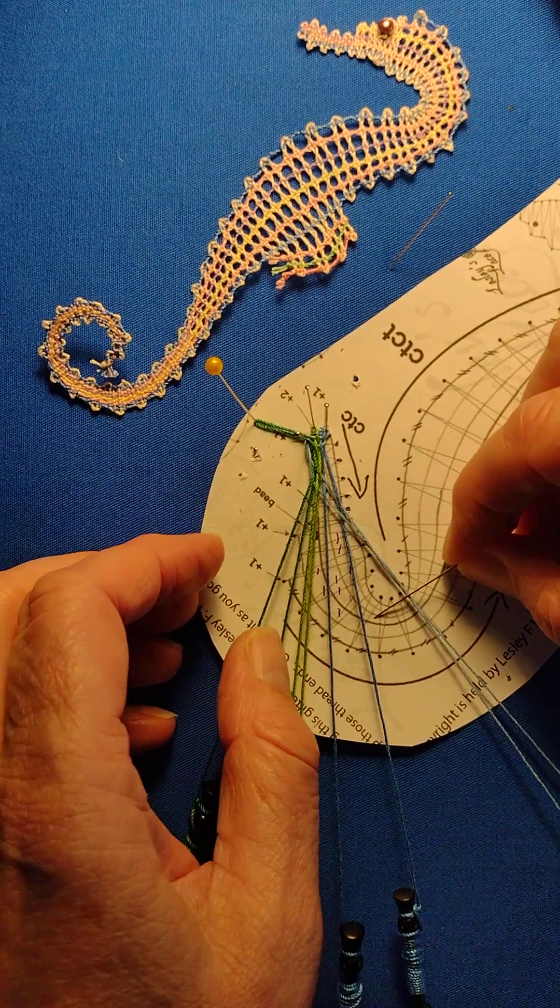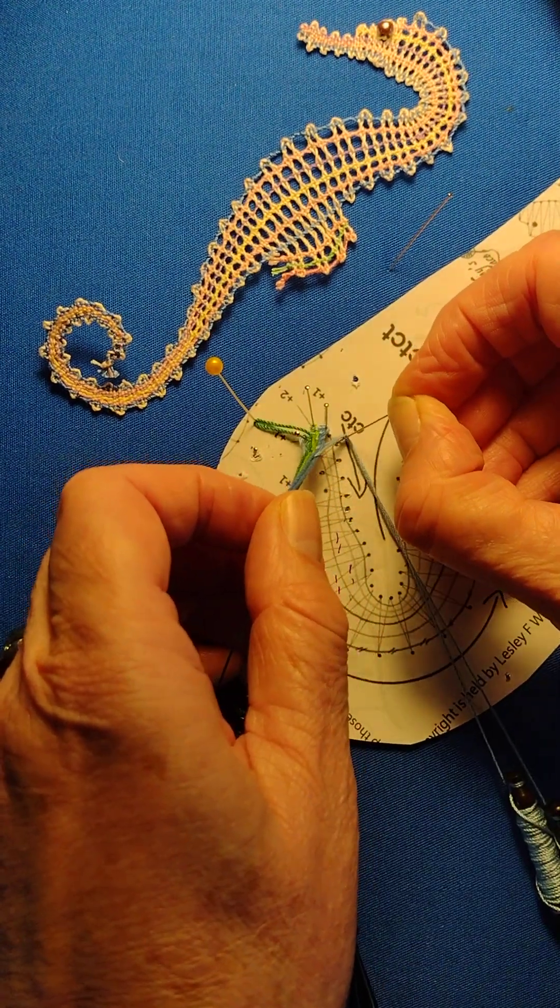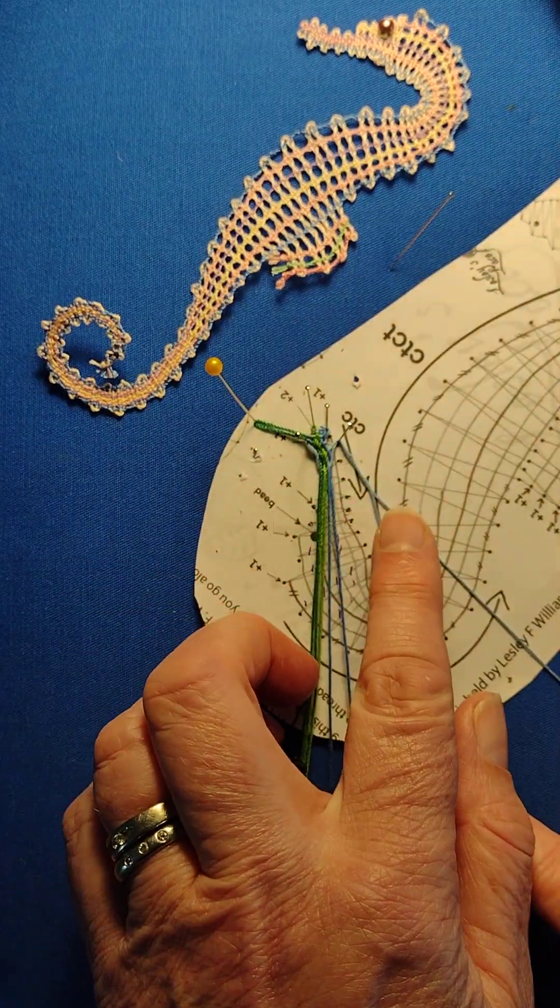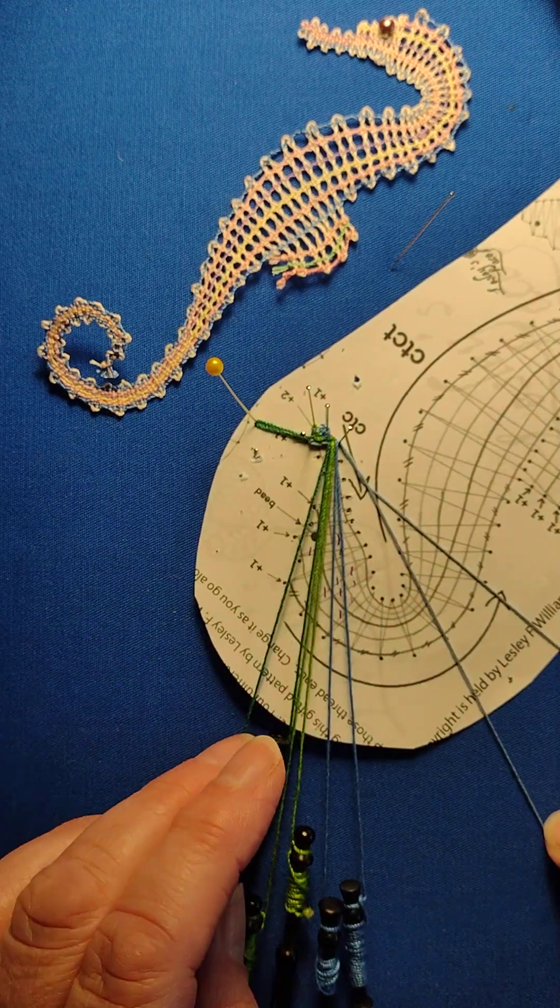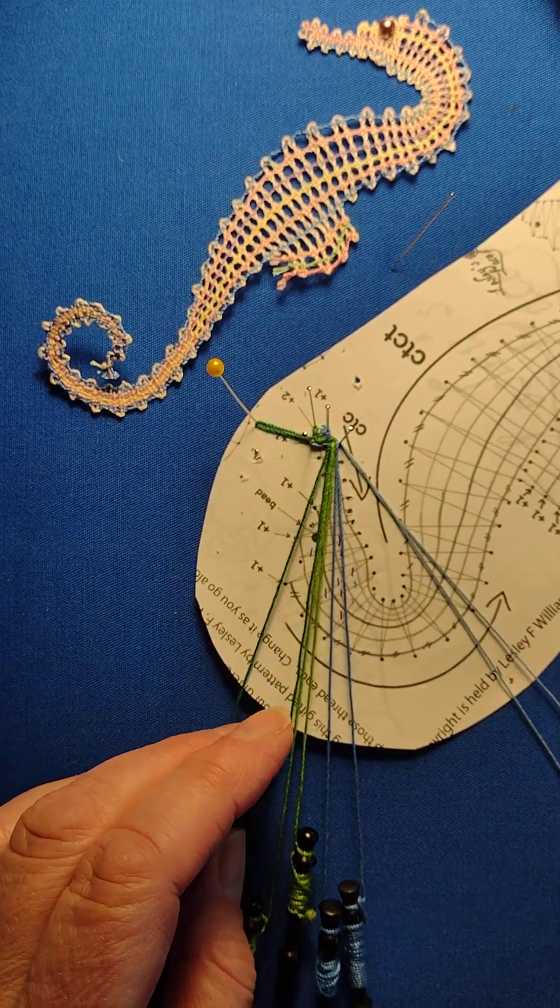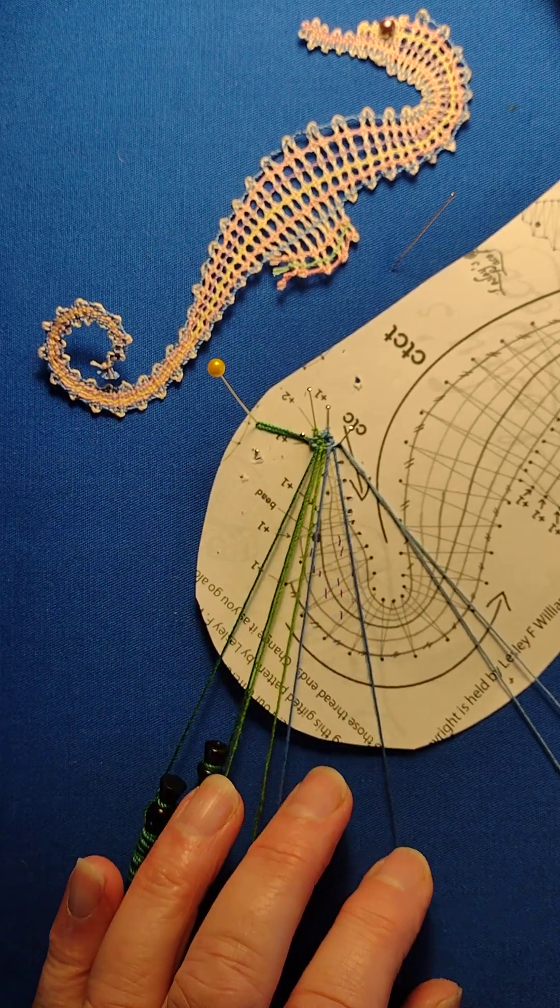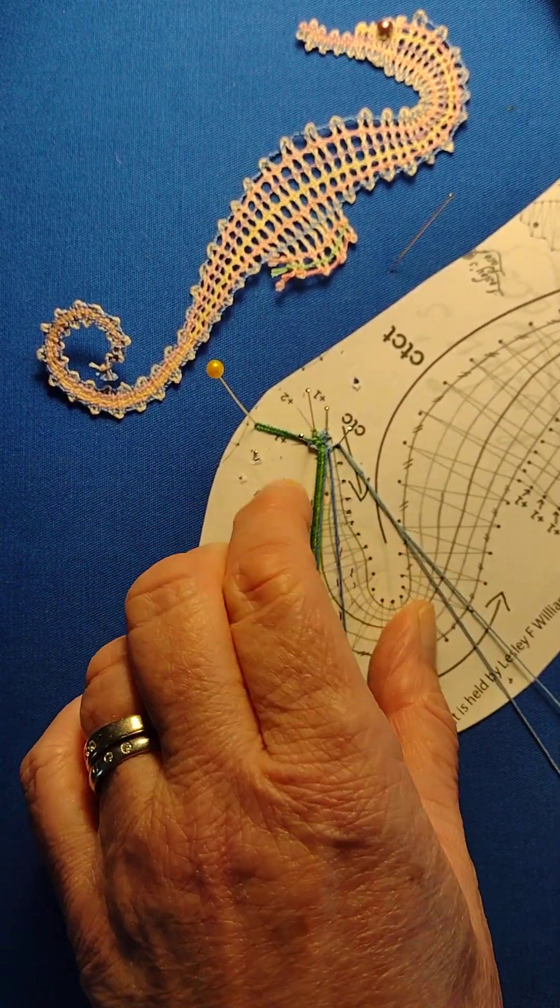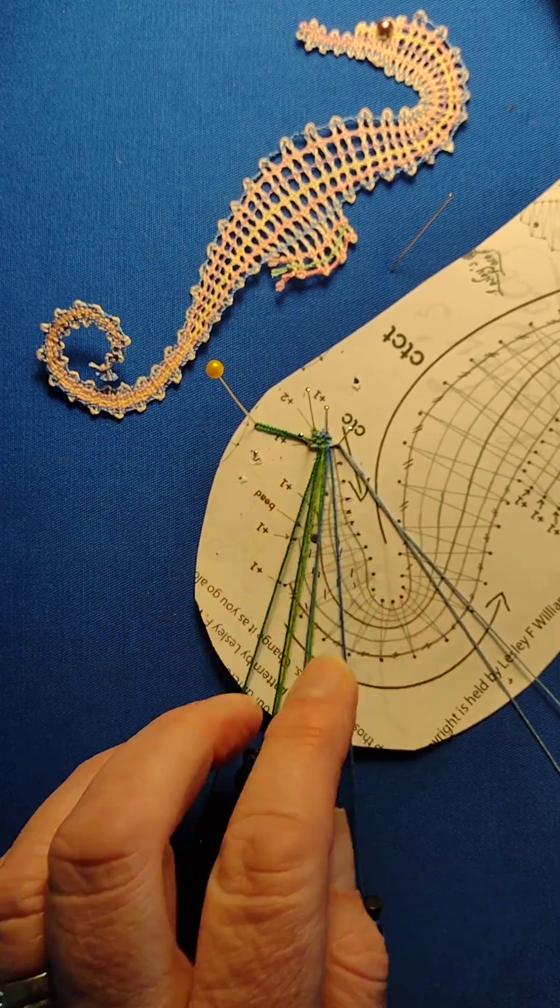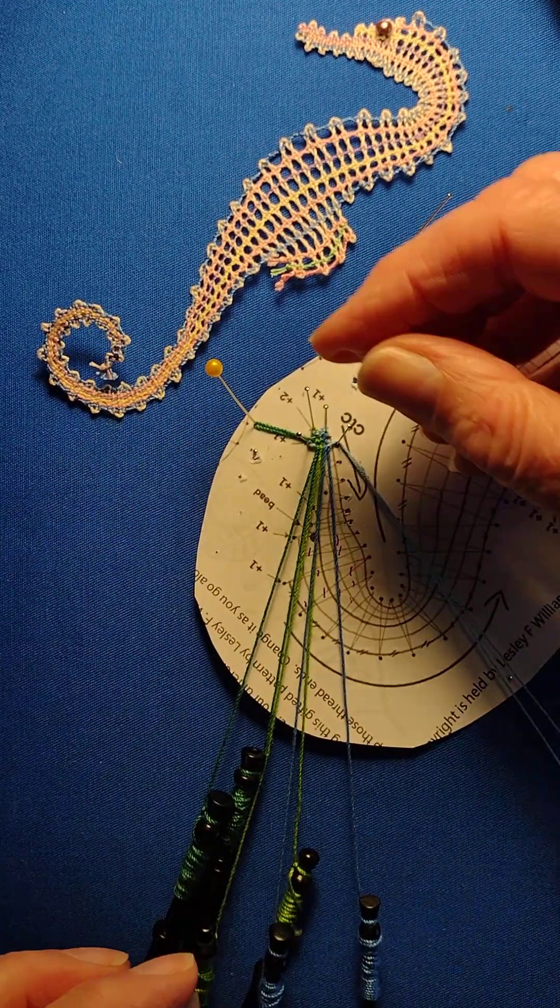If it's a finer thread you can use three twists. Put that in the next pinhole. The zigzag is already marked so you know which direction each one is going. Pulling the worker pair snug I'm tensioning down the passive pairs and you're just starting to see the weave starting there.